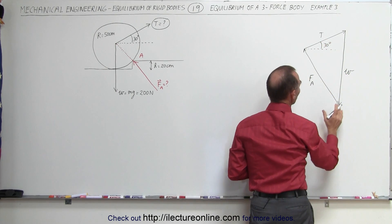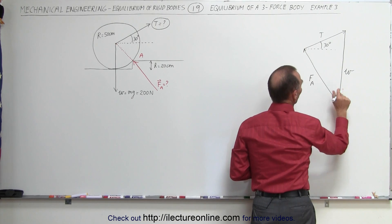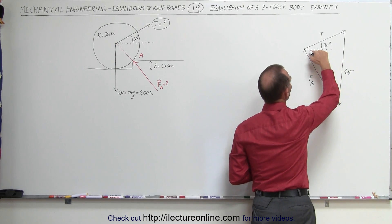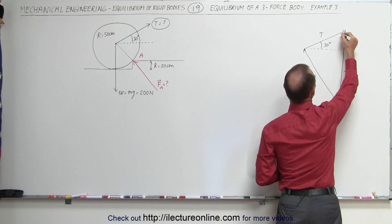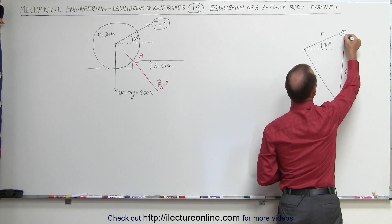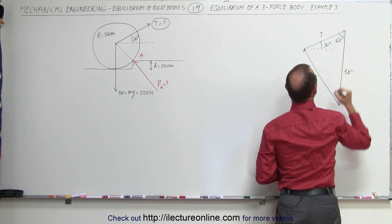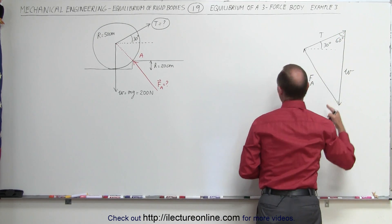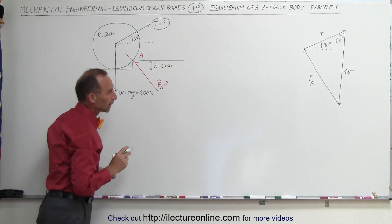What we don't know is the angle here. Once we know that angle, we'll be able to figure out the other angle, and the angle up here has to be 60 degrees. So we need to find that unknown angle.